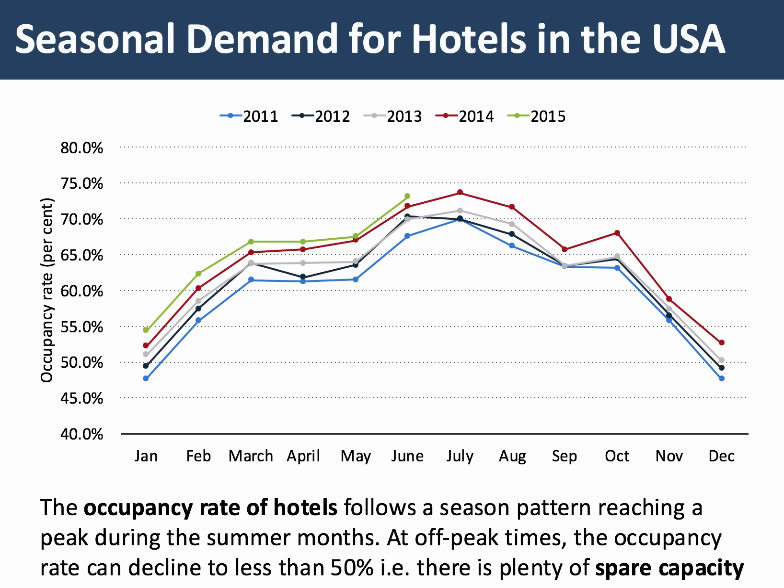In many sectors there's a strong seasonality in demand. This chart shows the occupancy rate for hotels in the USA, obviously peaking in June and July and falling either side. At off-peak times where there's plenty of spare capacity, hotels will be looking to sell their spare rooms, perhaps on a last-minute standby basis. In these types of industries the fixed costs are quite high and the marginal costs are low and predictable, so it makes commercial sense to offer a discount at off-peak times.